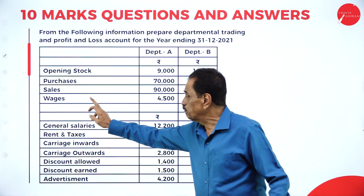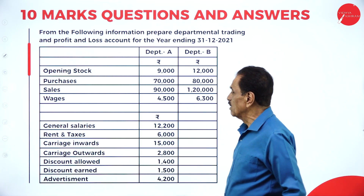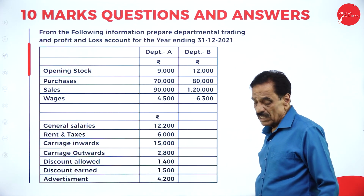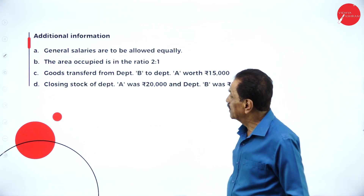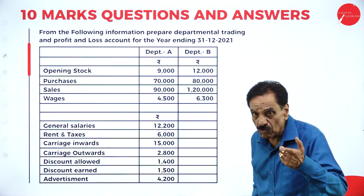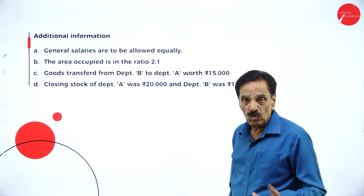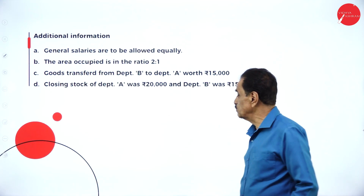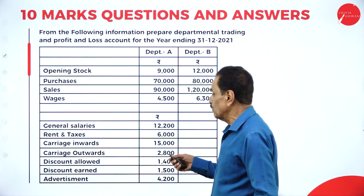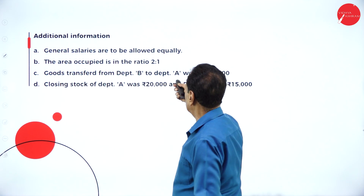Now we move on to the problem. Opening stock: 9,000 and 12,000. Purchases: Department A 70,000, Department B 80,000. Sales: 90,000 and 1,20,000. Wages: 4,000. General salaries and rent and taxes are also given. General salary is to be allocated equally — 12,000 equally means 6,100 each. Rent based on area in the ratio 2:1, so 2/3 of 6,000 is 4,000 and 1/3 is 2,000. Carriage inward on purchases, carriage outward on sales, discount allowed, and discount earned are also given.